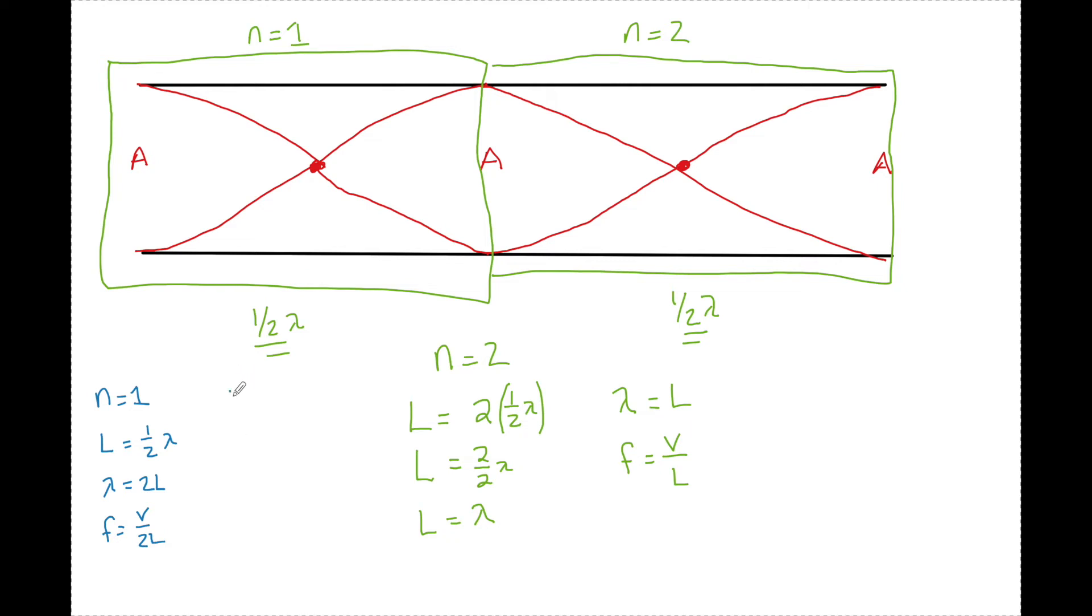Now in the second one right here, we had L equal to two times a half of a wavelength. And then we have wavelength equal to two over two. And then we had F equaled V over L. So how can we come up with an expression for any harmonic or resonant frequency that we might have? So for any N, we can say that L is equal to N times one half of a wavelength.